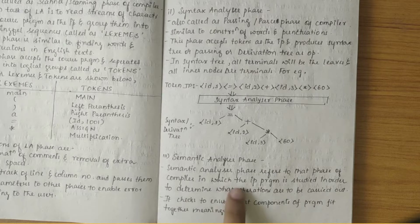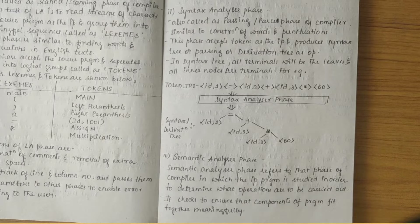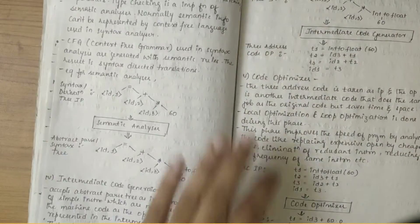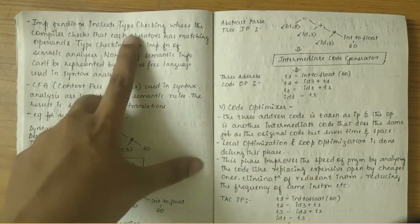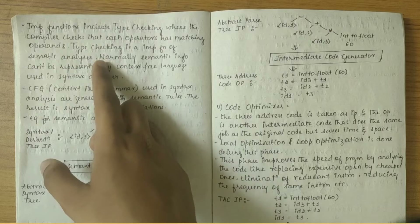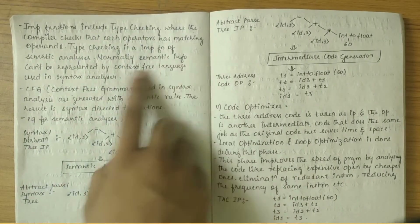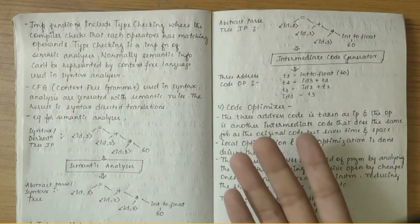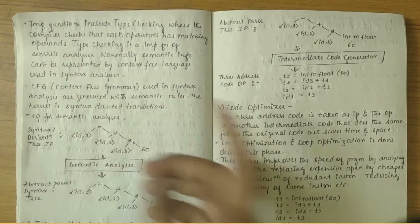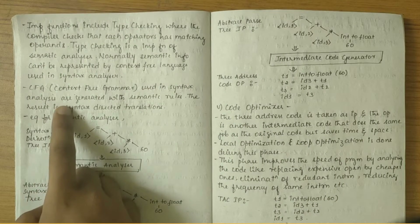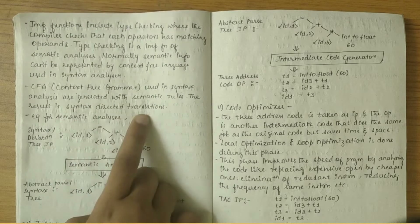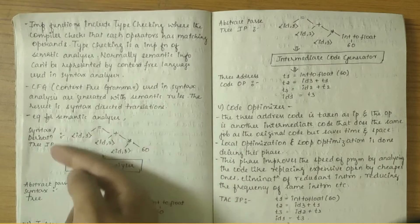The third phase is the semantic analyzer. It refers to that phase of the compiler in which the input program is studied in order to determine what operations are to be carried out. It checks to ensure that components of the program fit together meaningfully. An important function is type checking, where the compiler checks that each operator has matching operands. Semantic info normally can't be represented by context-free grammar used in syntax analysis, which is why type checking is needed. Context-free grammar is used with semantic rules, and the result is syntax-directed translations.